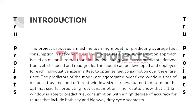The project introduces a machine learning model that predicts the average fuel consumption of heavy vehicles. Unlike traditional approaches based on time periods, this model employs a data summarization technique that focuses on distance traveled. It utilizes seven predictors generated from vehicle speed and road grade.